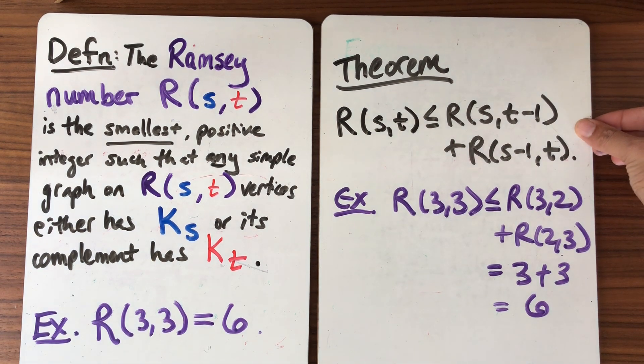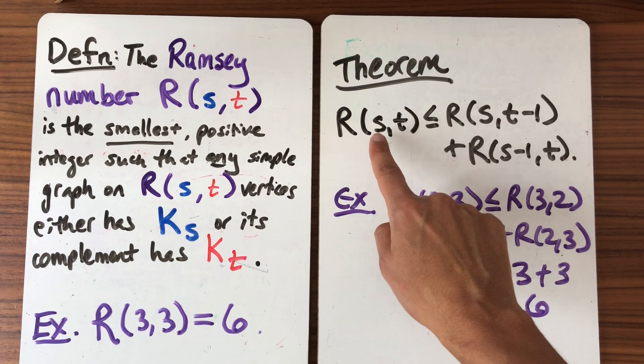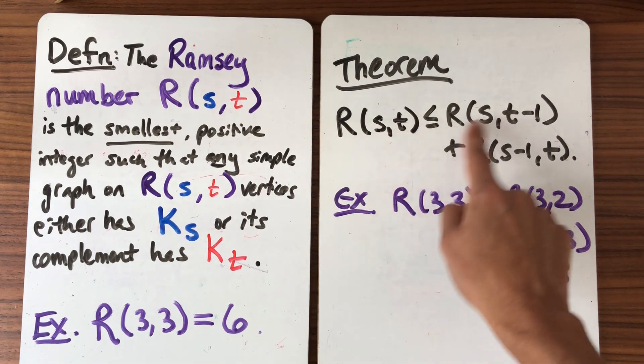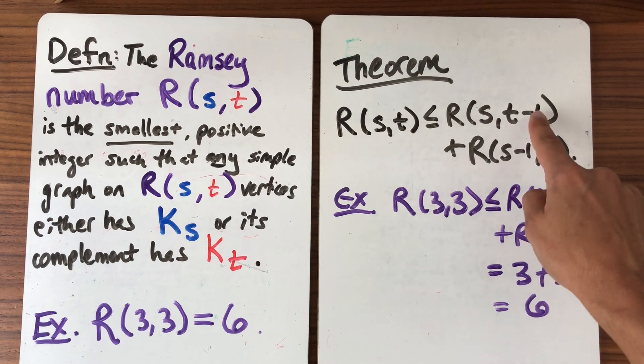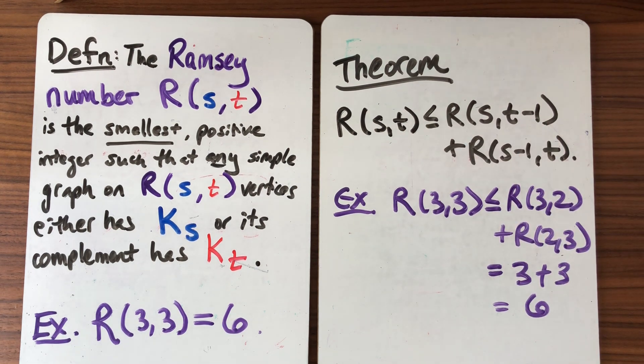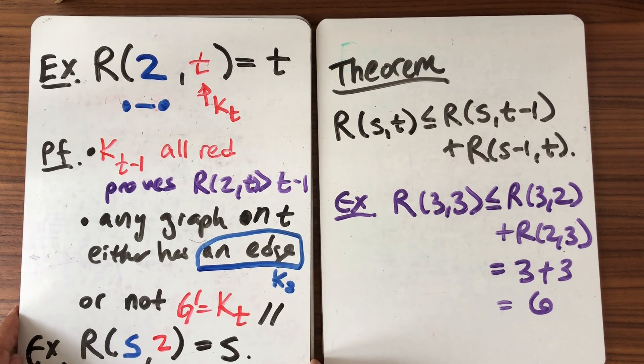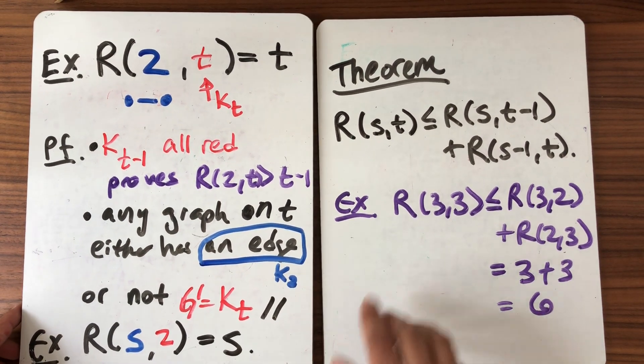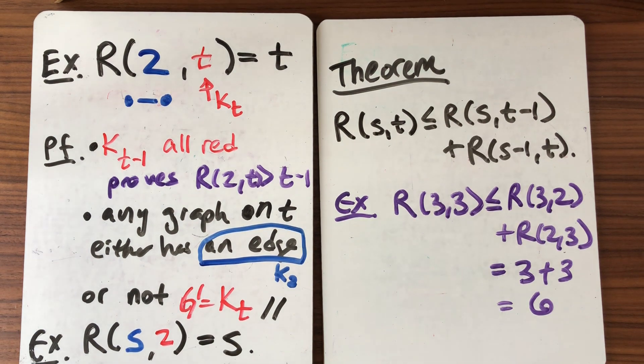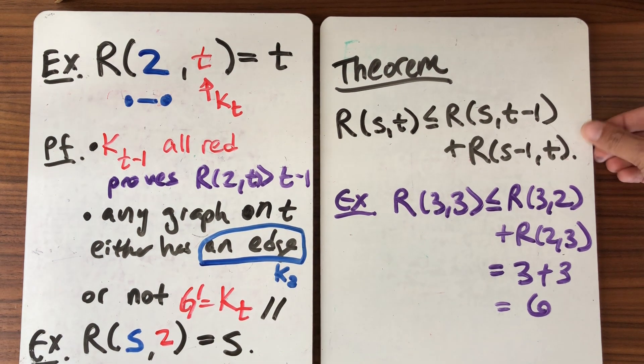So this is the theorem we're going to prove next time. This is going to show us that the Ramsey numbers exist because they're finite and we're going to do it by induction. But notice that we have to do sort of two steps in our induction and our base case for the induction is what we just saw here with these two examples. So these examples are important in their own right but they're also important in using this recurrence relation to get a bound on our Ramsey numbers.